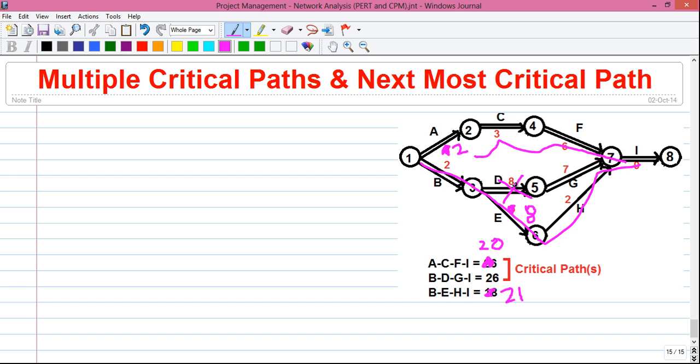In that case, we have to choose an alternate path in the network which will take the minimum time to complete the project. So in that case, we will take the path B, E, H, I with next most value, that is, 21.